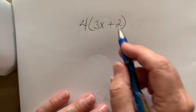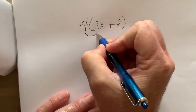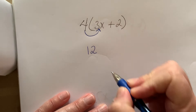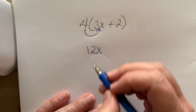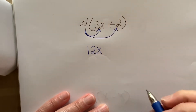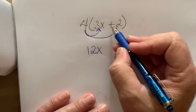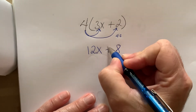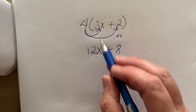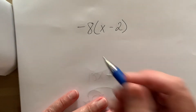Alright, let's do numbers. Here we have 4(3x + 2). The factor outside is 4, so we multiply: 4 times 3 (the coefficient) gives us 12, and the x comes down, giving 12x. Then we go back to the 4 and multiply it by the other term inside, which is 2: 4 times 2 is 8. Don't forget to bring down the operation — plus — so the result is 12x + 8. Much cleaner once you get rid of those parentheses.